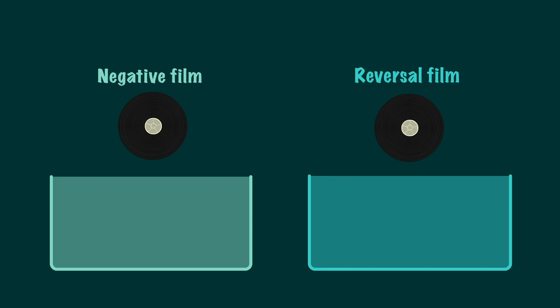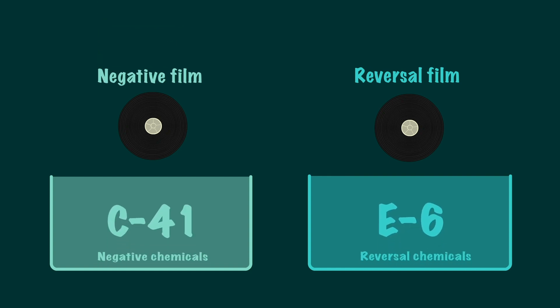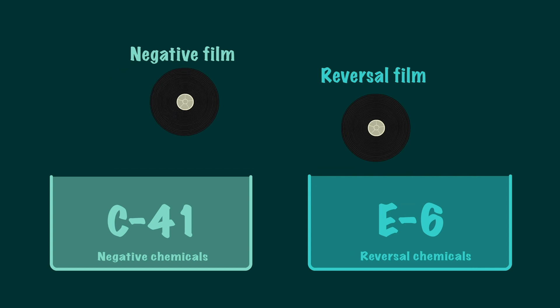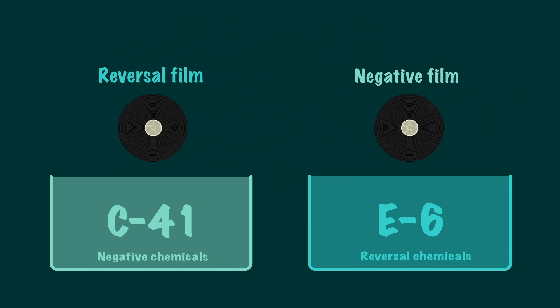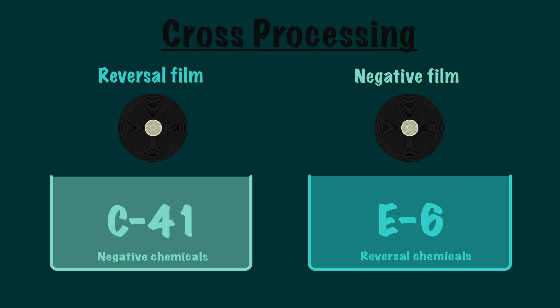Reversal and negative film each have their own special type of chemical solution. When you switch the chemicals in the emulsion, you can get some interesting effects. This is called cross-processing.